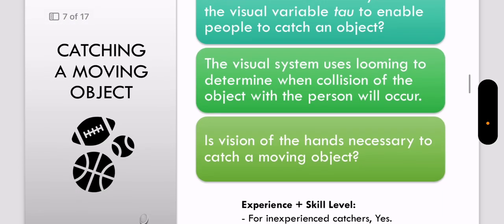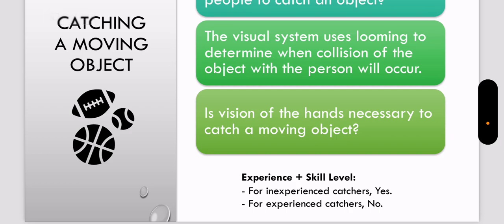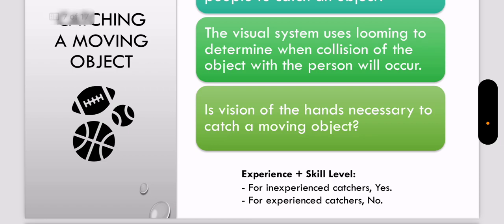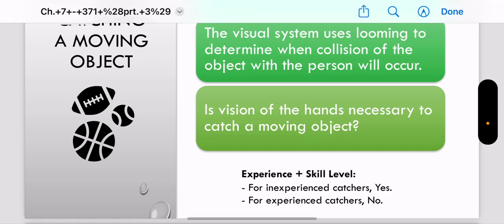And then to answer whether vision of your hands is necessary to catch a moving object - like having your hands in your line of sight - if you're inexperienced and you're not very good at it, then yes, it's pretty crucial. But if you know how to catch a ball and you've done it for a while, you know that you don't need to be seeing your hand to catch a ball. Anyways, that's it.